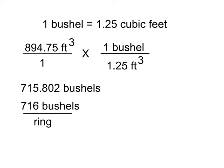We can round to 716 bushels per ring, or to not put too fine of a point on it, we could simply round this to 700 bushels per ring. So if we look in the top of our bin and we see that the grain comes up, let's say, to two rings, we would know that we've got about 1,400 bushels in there and so on.